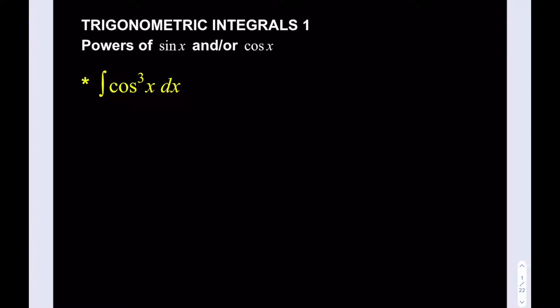There's a difference when you have an even power or an odd power. In this case, we do have an odd power first. So what do we do? We're going to split it up. We're going to take one of the cosines and just separate it. The reason we do that, you'll see in a little bit.